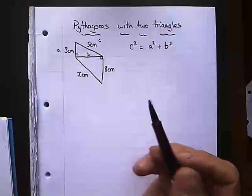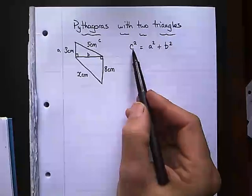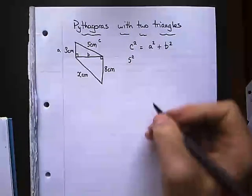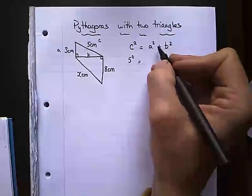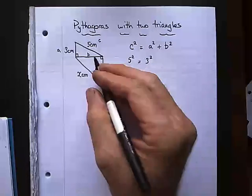Right, so I need to work out B so I'm going to substitute in my C value which is 5, 5 squared. I'm going to substitute in my A value which is 3 so that's 3 squared but I don't know B but I'm going to work that out.